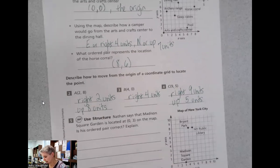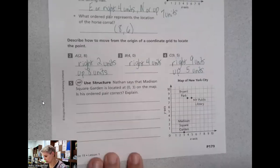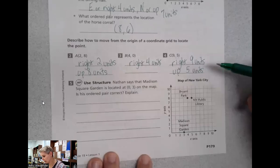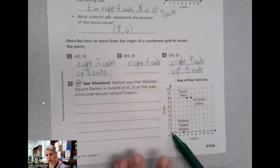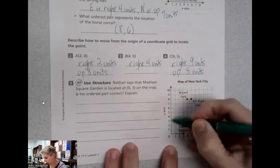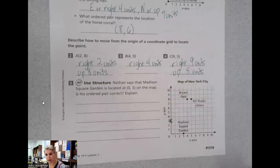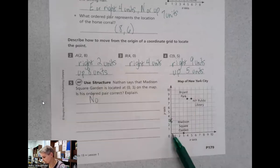Nathan says that Madison Square Garden is located at the coordinate point (0,3) on the map. Is his ordered pair correct? So if we think zero, we don't move right, we stay there and we go up to three. That would be right there. Is he correct?